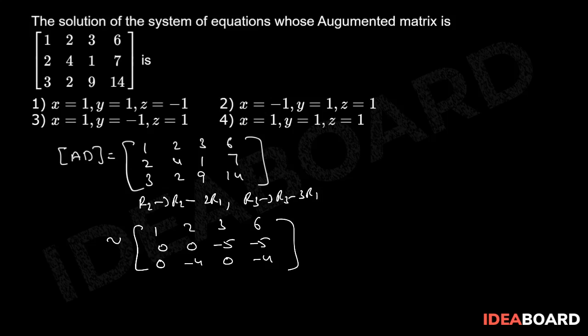Now this implies X plus 2Y plus 3Z equals to 6, minus 5Z equals to minus 5 implies Z equals to 1, and minus 4Y equals to minus 4 implies Y equals to 1.